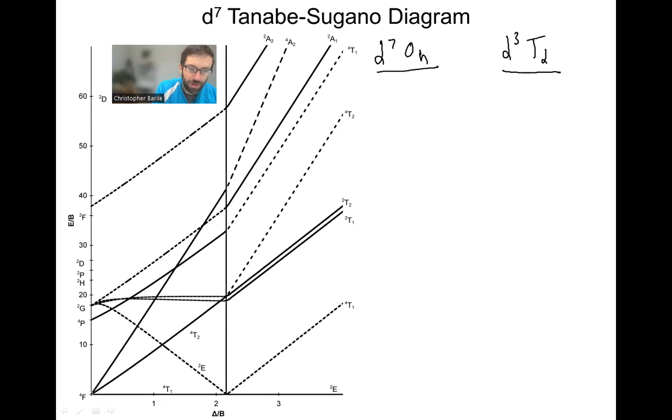If we have a value of zero, we are at the ground state. These are all excited energies relative to the ground state. Same sort of units with delta on the x-axis. Delta is a measure of the T2G to EG gap in octahedral complexes or the E to T2 gap in tetrahedral complexes.